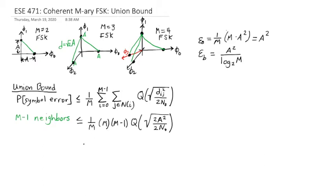So what we do is we plug in for A squared. This means that A squared is equal to energy per bit times log base two of M. And so we can rewrite this expression canceling the M's. We've got M minus one times the Q function of the two's cancel.